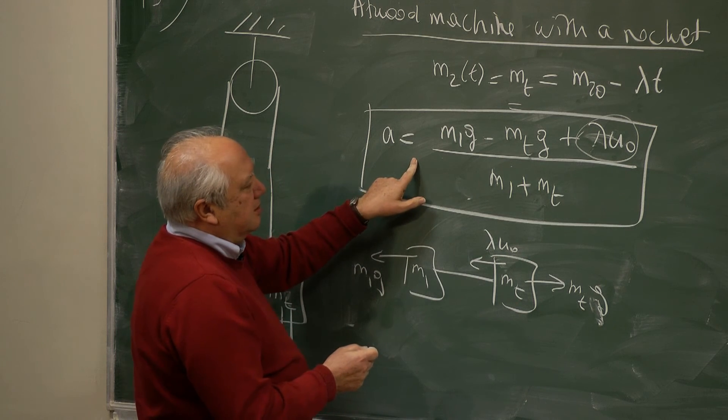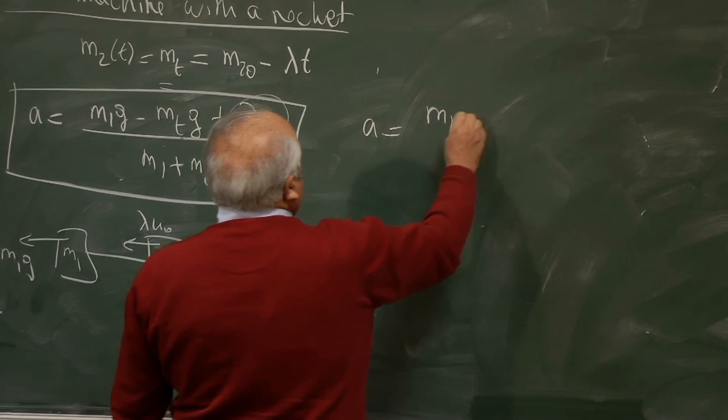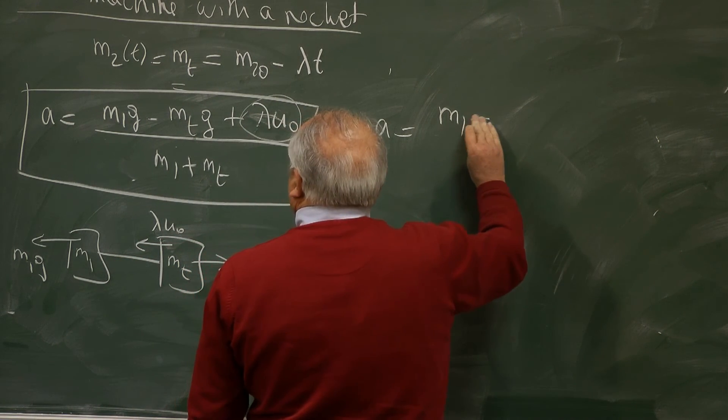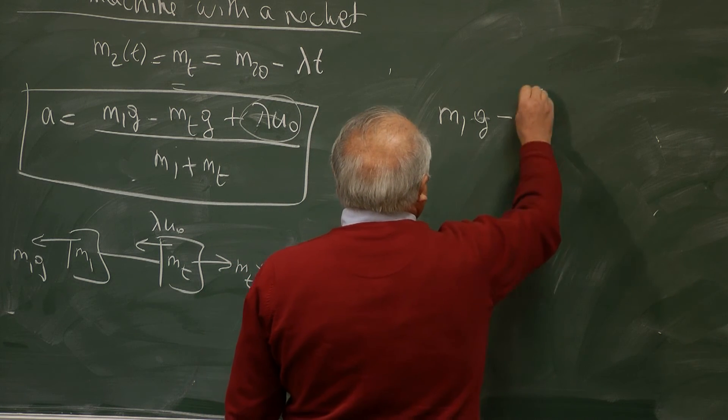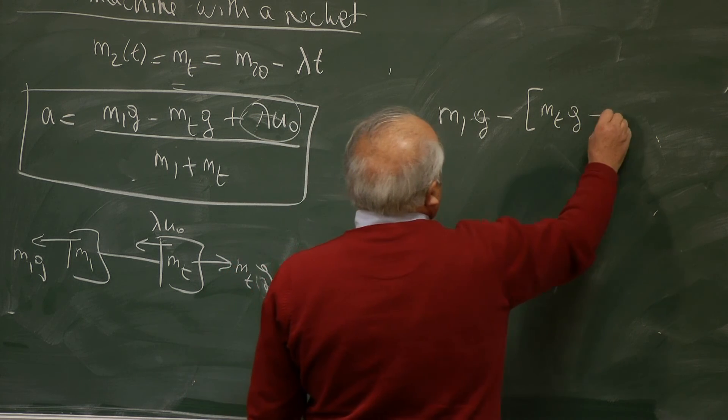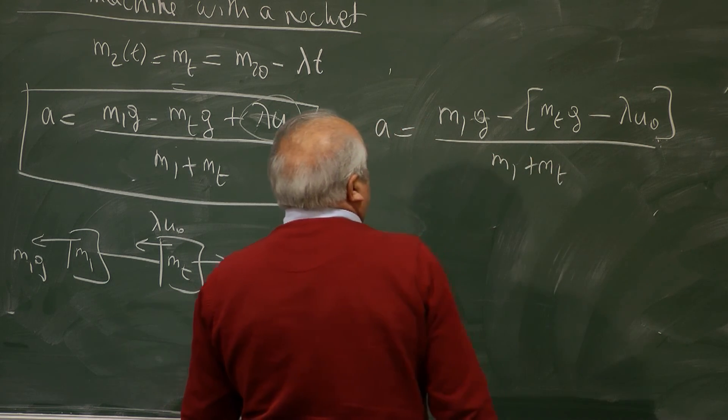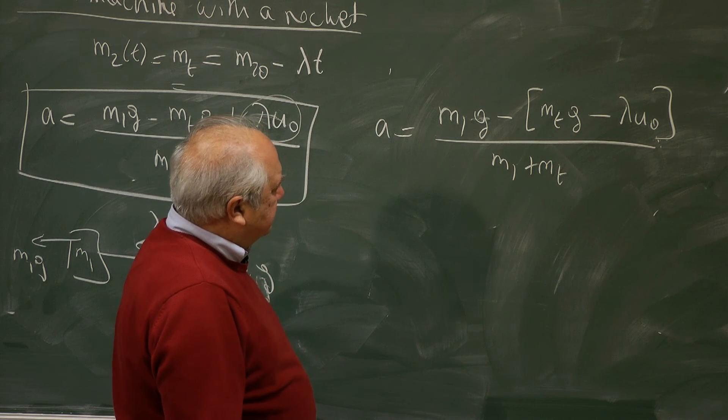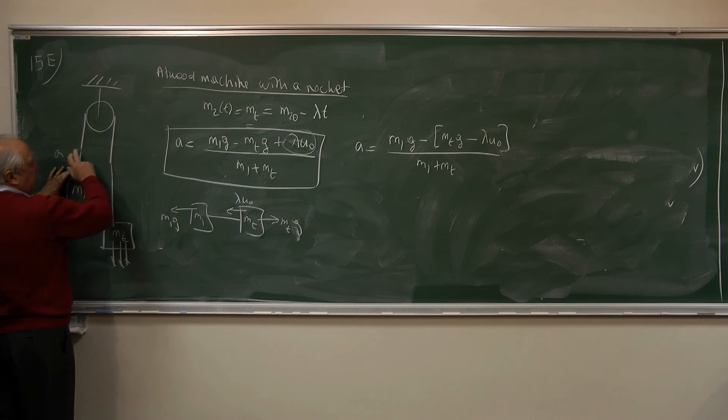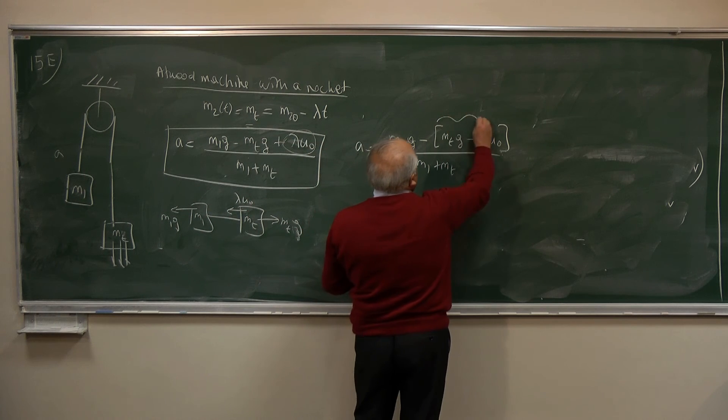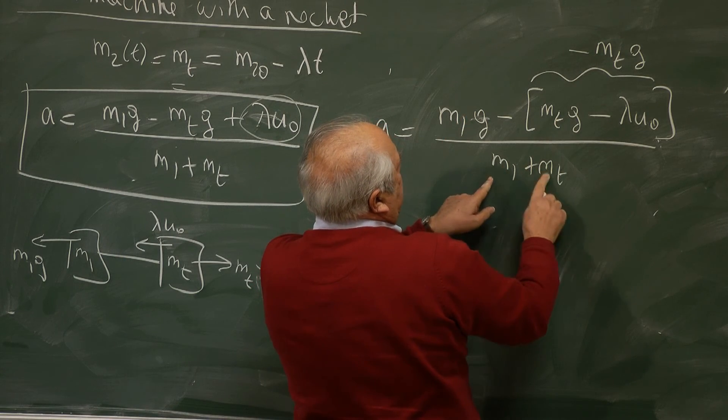When, under what circumstance can this be G? So let's write it like this. A equals M1g minus MTg minus lambda U zero divided by M1 plus MT. Now, the only way it can be G, namely this is going up so fast with such acceleration that the rope becomes slack, is when this is minus MTg. Then M1 plus M2 cancel, it will be G.